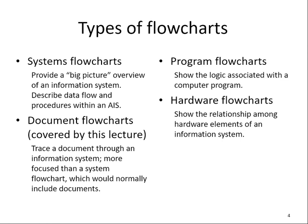There are several types of flowcharts. We have system flowcharts, which provides a big picture overview of the information systems. We also have program flowcharts, which shows logic associated with a computer program. We have hardware flowcharts, which shows relationships among hardware elements of an information system. The one covered by this lecture is document flowcharts — it traces how documents flow through information systems, focusing on how documents are used, processed, and sent through the system.